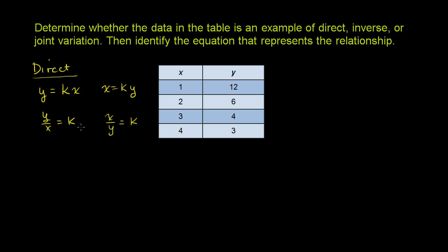Or that x over y is going to be equal to some other constant. These aren't necessarily the same k. I'm just saying it's a constant relationship. These are all examples of direct variation.